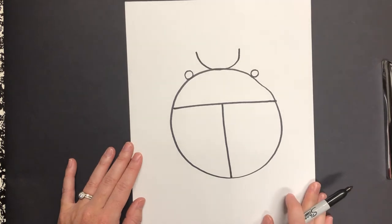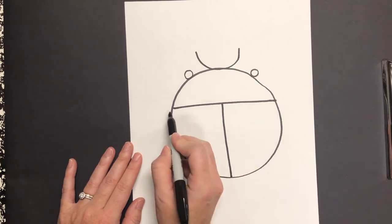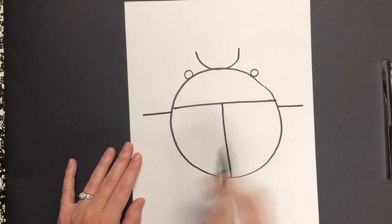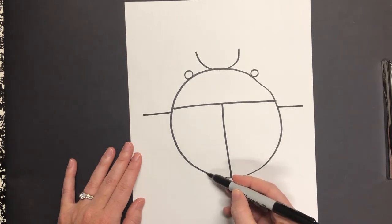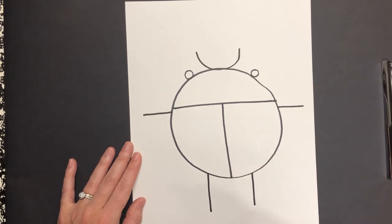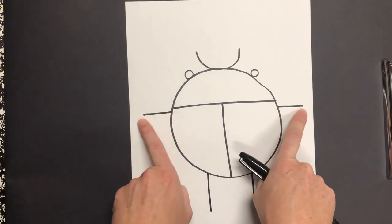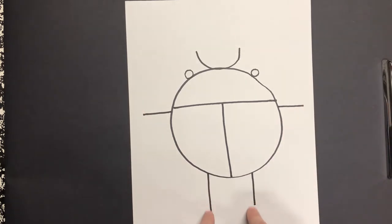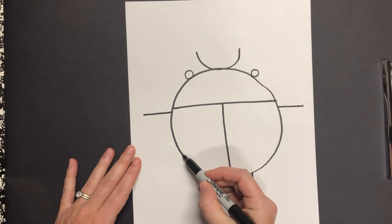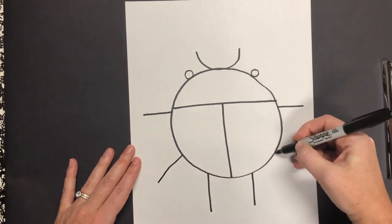Now this is an insect so it has six legs. The first two legs, one on this side and one on this side and the bottom two legs, one down here and one down here. So these two go straight out and these two go straight down and then the ones that I'm going to put here come out at an angle like this and like this.